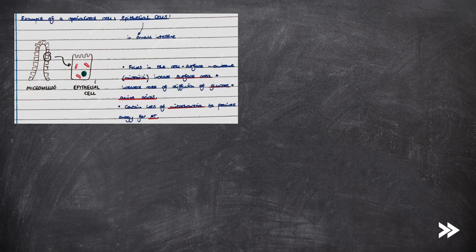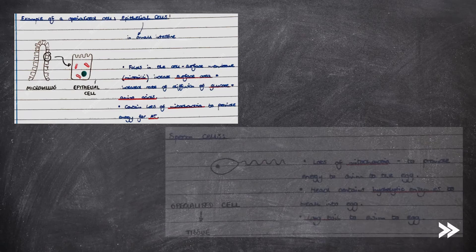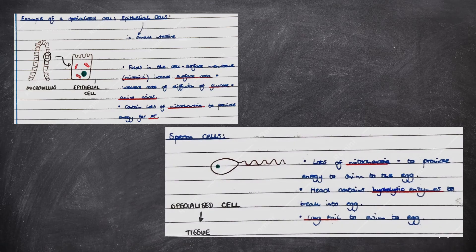Let's have a look at some examples of specialised cells, starting with epithelial cells in the small intestine. Folds in their cell surface membranes, called microvilli, increase the surface area, increasing the rate of diffusion of products of digestion such as glucose and amino acids. They also contain lots of mitochondria to provide energy for active transport of these substances. Then we have sperm cells, which contain lots of mitochondria to provide energy to swim to the egg. The head also contains hydrolytic enzymes to break into the egg, and it has a long tail to swim to the egg.